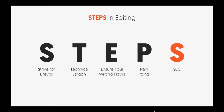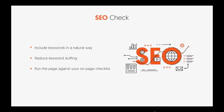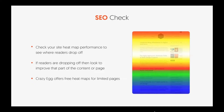The last step in editing is SEO. Make sure you include keywords in a natural way, ideally in the first paragraph if not the first sentence. Reduce keyword stuffing and run the page against your page checklist — if you do that, you should be fine on the SEO prep. I also like using Crazy Egg, where I can see where readers are dropping off. If people keep sticking around, they're much more likely to keep coming back, Google notices your time-on-site, and your rankings climb.